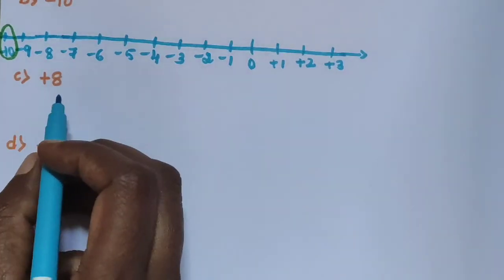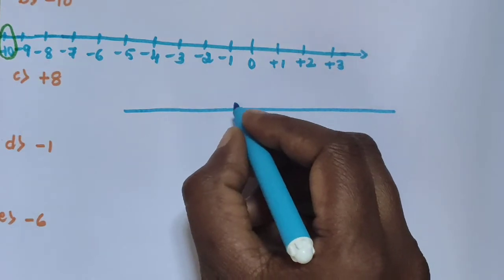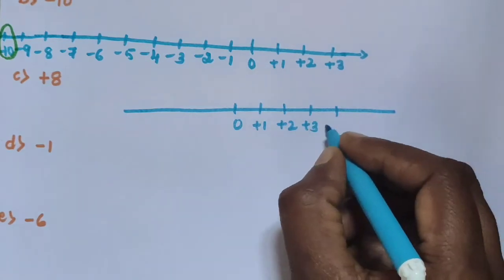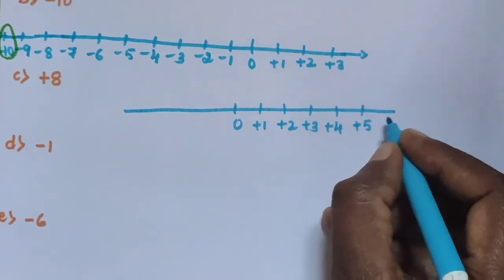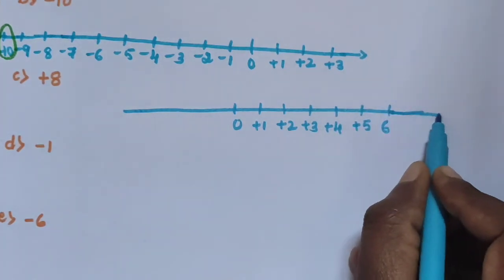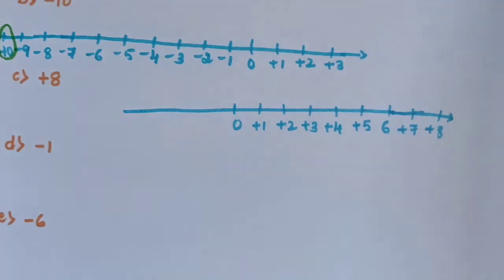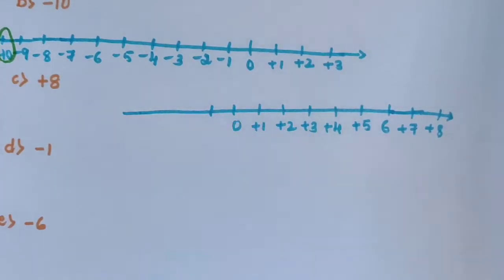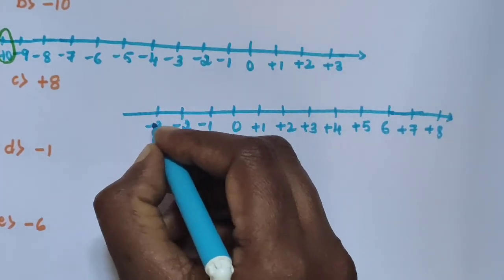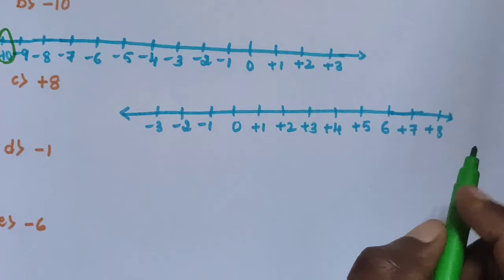Sub-question C: Plus 8. Draw the number line with 0 in the center, then mark plus 1, plus 2, plus 3, plus 4, plus 5, plus 6, plus 7, plus 8 to the right, and minus 1, minus 2, minus 3 and so on to the left. Represent plus 8 on the number line.